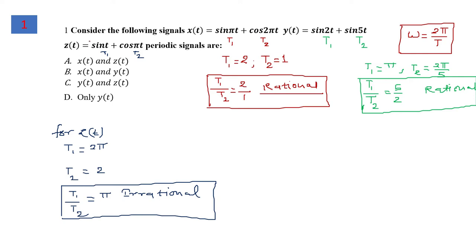Now let's solve question number 1. Consider the following signals x(t), y(t), and z(t). We need to determine which signals are periodic among these three. To obtain the periodicity of continuous time added periodic signals, we find the individual time periods T1 and T2, and if their ratio is rational, we call the signals periodic.